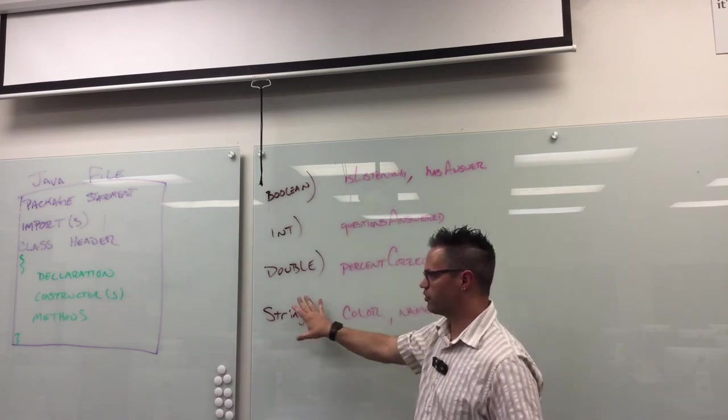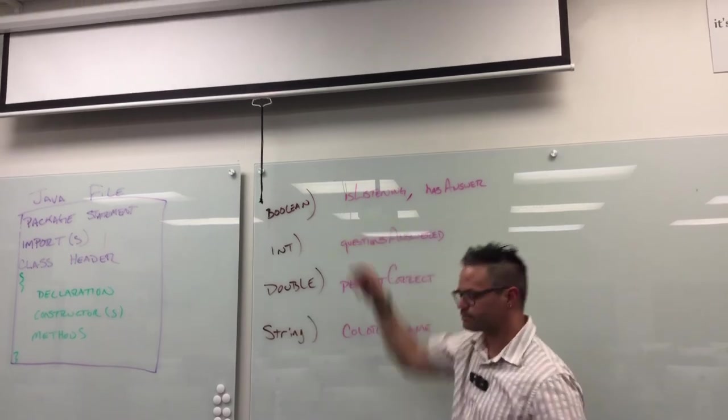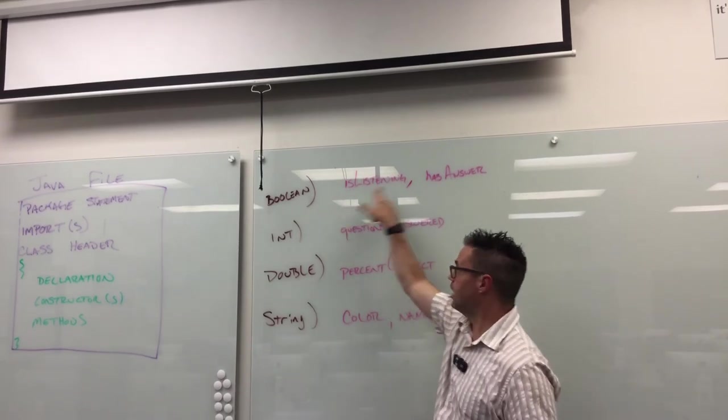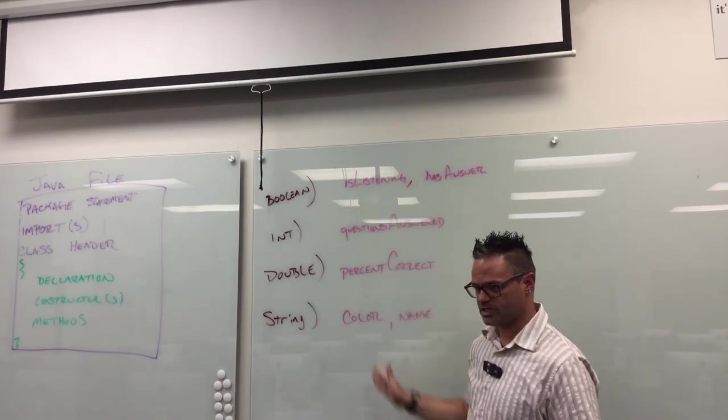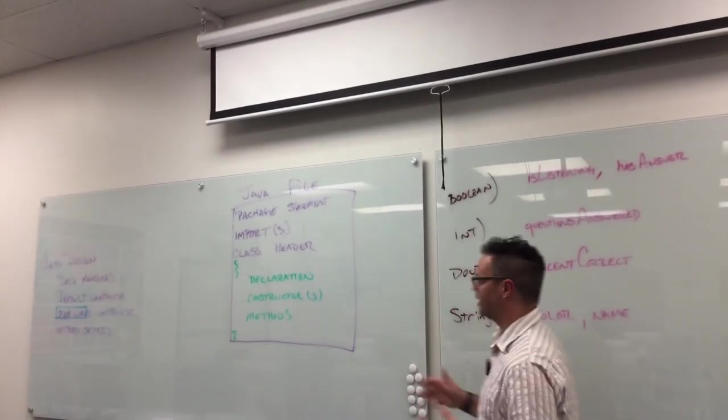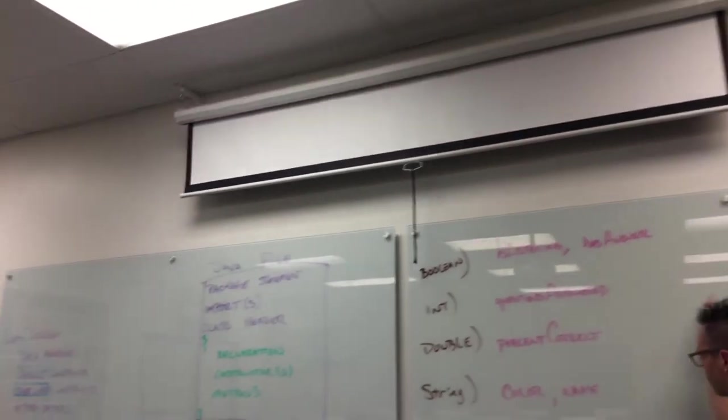So now that we've got our data members that we've talked about, and we know what kind of data type it is, and the names for all of them, we have them all listed out. The next thing we have is we'd want to put them inside our declaration section. And so for each data type that we have, we put them in the declaration section.